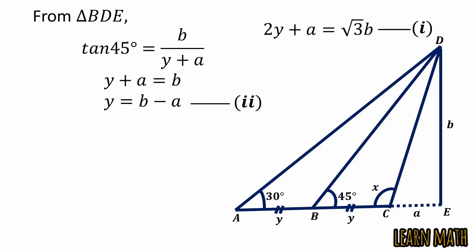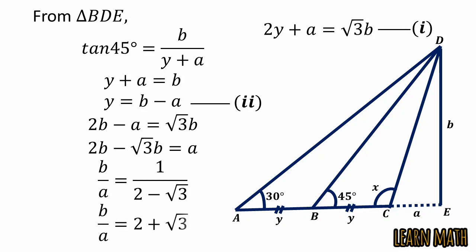Simplifying, we get 2b minus a equals square root 3 times b. Again simplifying, 2b minus square root 3 times b equals a. Taking b common and simplifying, multiply and divide by the conjugate 2 plus square root 3. We get b over a equals 2 plus square root 3.